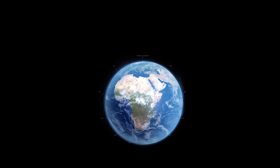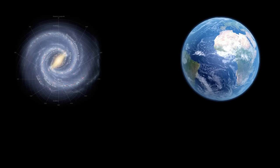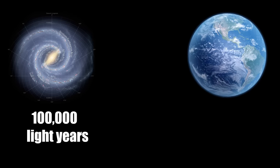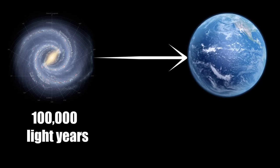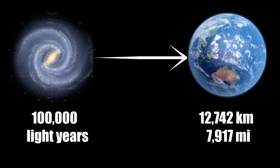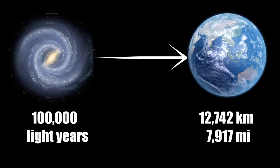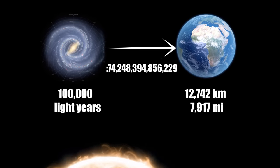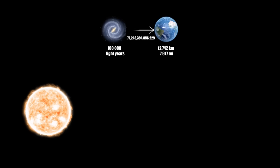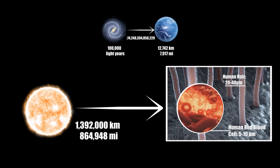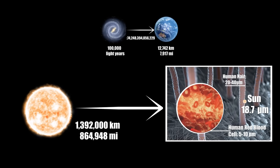If we were to compress the Milky Way, a galaxy that spans an astonishing 100,000 light-years across, down to the size of Earth, approximately 12,742 kilometers in diameter, we would be scaling the galaxy down by about 74 trillion times. In this drastically scaled-down galaxy, the Sun, which in reality measures about 1.4 million kilometers in diameter, would shrink to less than the width of a human hair, approximately 18 micrometers in diameter.